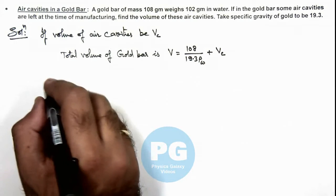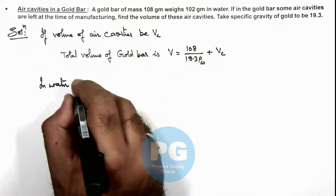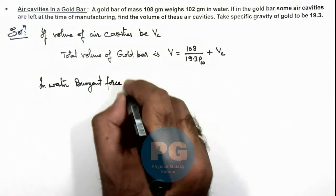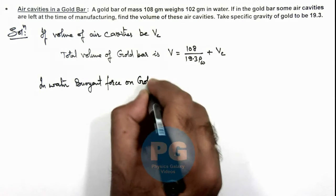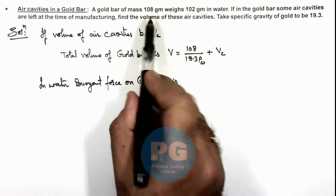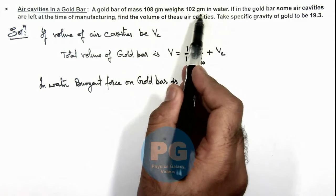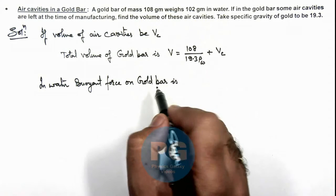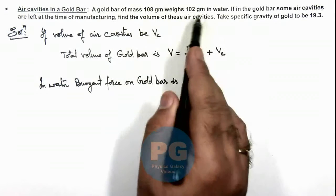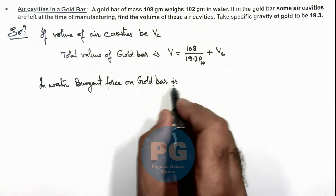And we can write: in water, buoyant force on gold bar—you can see in air it weighs 108 grams, in water it weighs 102 grams, so buoyant force on it will be equivalent to 6 grams of water. So here we can write buoyant force on gold bar is...